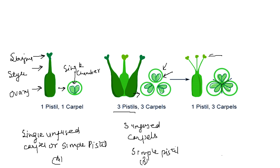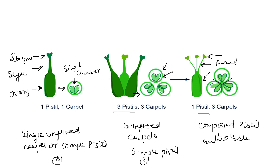Now we see another diagram. Here is a stigma, here is a style, and here is an ovary, but the styles are fused together, making a compound pistil. When we do the cross-section of this ovary, we see the chambers are fused with each other. Therefore it is a compound pistil.